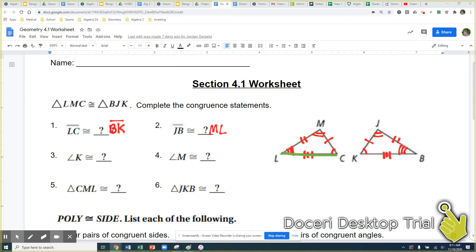Now we're looking back at triangles. C, M, L. So I'm going from C to M to L. What does that match up to? K, J, B. So that's going to be K, J, B.